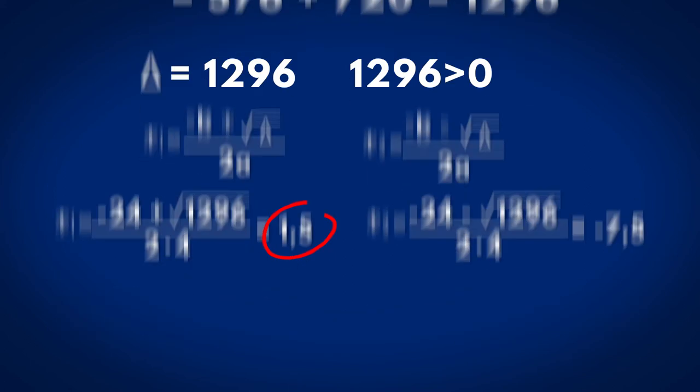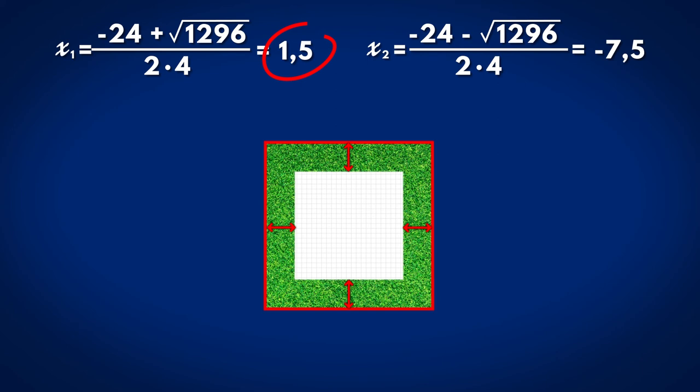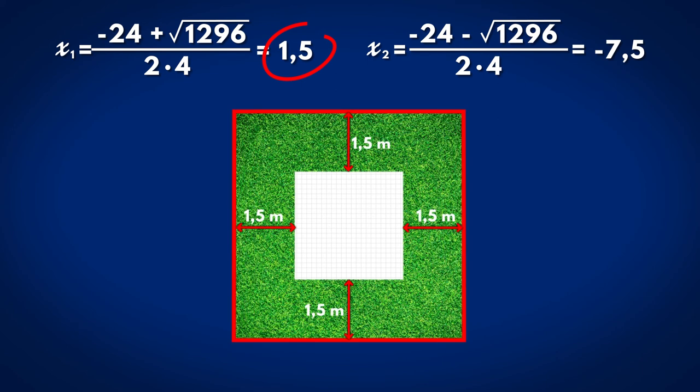We've solved it. The maximum width of a surface planted with grass is 1.5 meters. This is a real-life situation when you can use the equation of type ax² plus bx plus c equals 0, where a, b, c are real numbers and a different from 0.